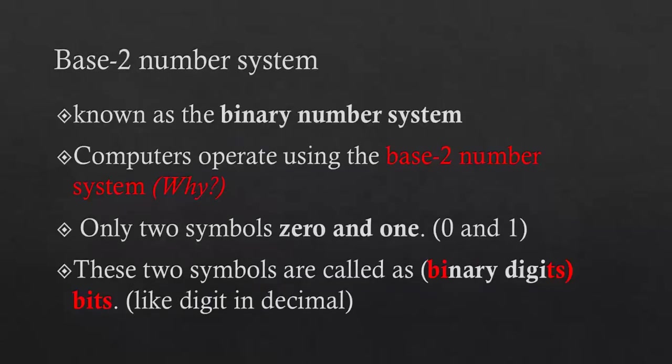Base two number system is known as binary. Computers operate in base two with only two symbols: zero and one. These symbols are called bits, which stands for binary digits.